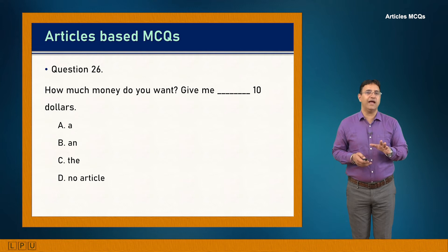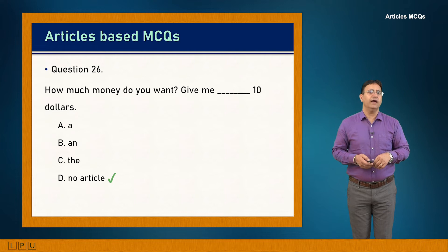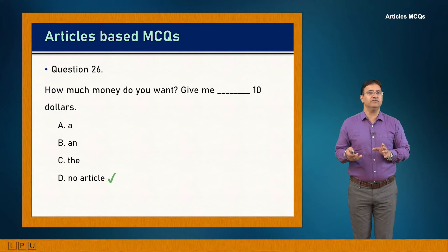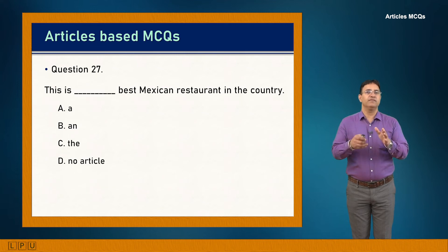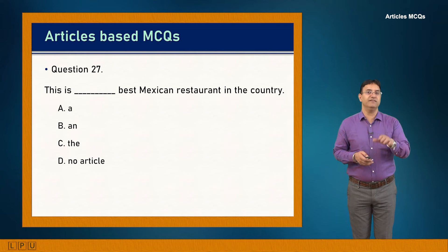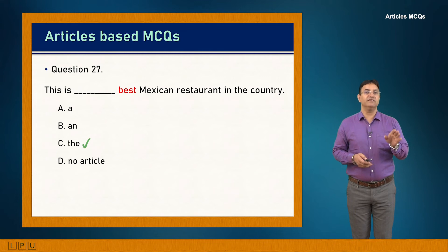Question 26: Give me dash ten dollars. Ten dollars is a plural entity; no article is needed for amounts. Answer is D: 'Give me ten dollars.' Question 27: This is dash best Mexican restaurant in the country. 'Best' is a superlative, so 'the' is used. Answer is C: 'This is the best Mexican restaurant in the country.'